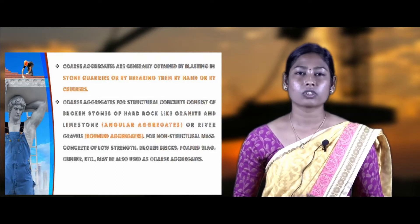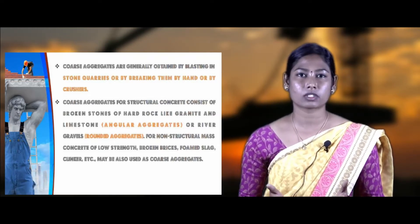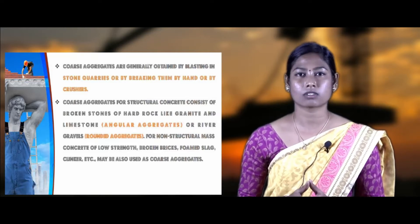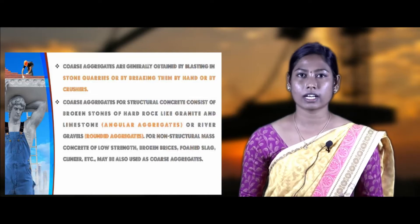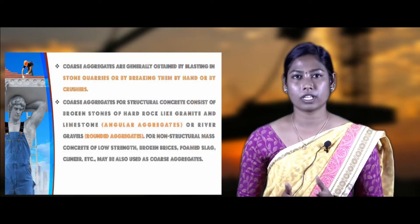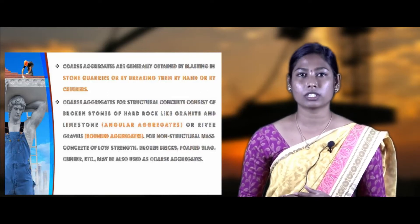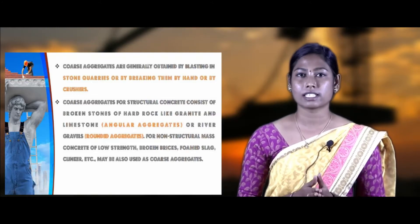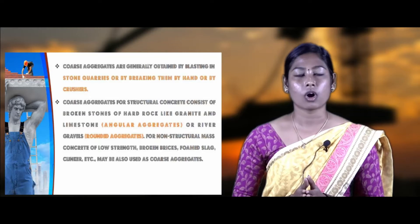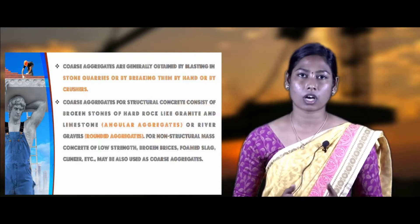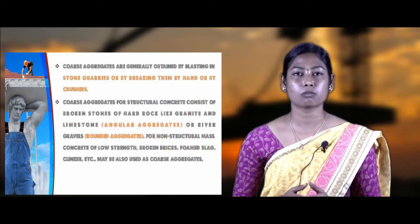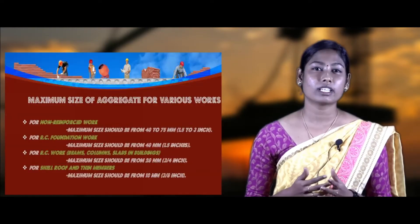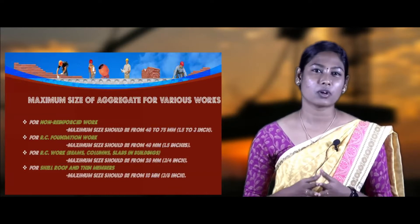Machine crushed stones generally consist of varying sizes of stones, and hand broken aggregates consist of similar sizes of stones. Before using the aggregates, they should be washed well. For structural mass concrete work, the aggregate preferred is broken stones of hard rock such as granite and limestone or river gravels. For non-structural mass concrete work, the aggregate preferred is broken bricks, formed slag, and clinker.